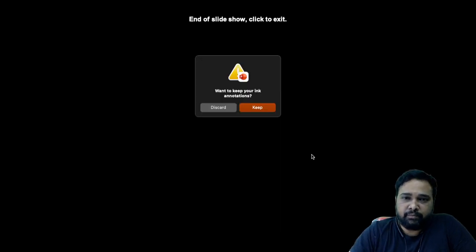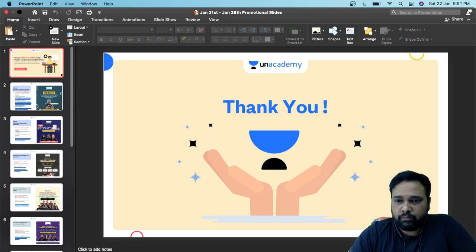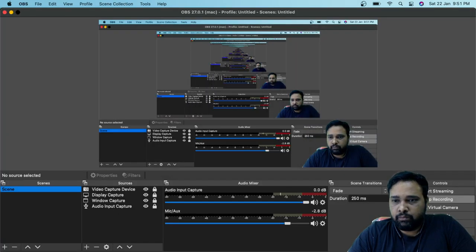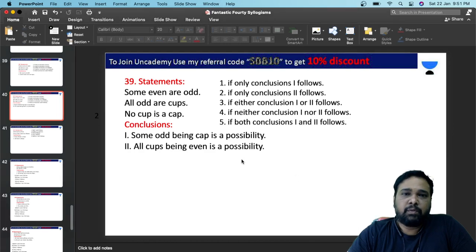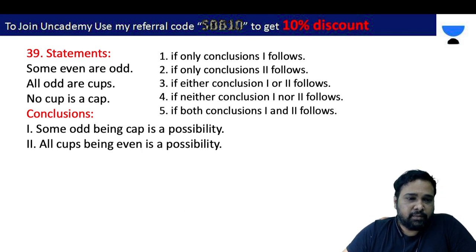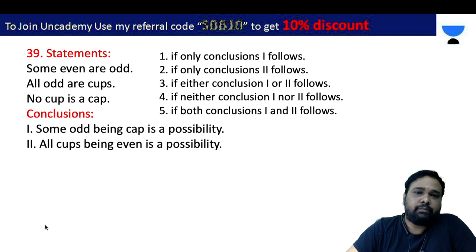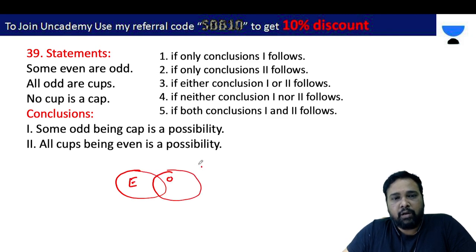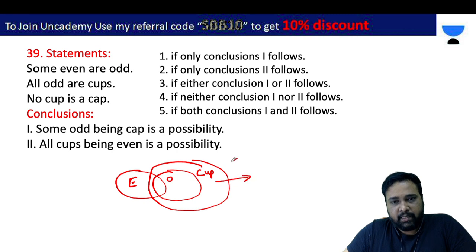So my topic is going to continue. My previous session covered up to the 38th word, so we go to the remaining from 39 onwards. First of all, we will explain the same statements. Some even or odd. Some evens are odd. All odd are cup. No cup is a cap.